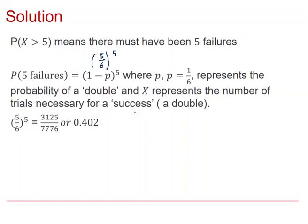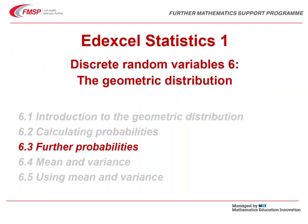That's quite an awkward fraction but easily evaluated as a decimal — give your answer correct to three significant figures. Whenever you have a geometric distribution model and need to find the probability of more than a particular number of trials before a success, it's always good to think about what that actually means. More than five trials means we must have had five failures before needing to go on to another trial. That's the end of this video; the next video will look at further probabilities with the geometric distribution.